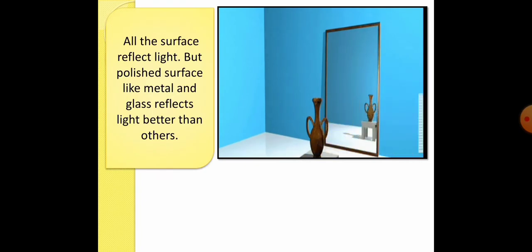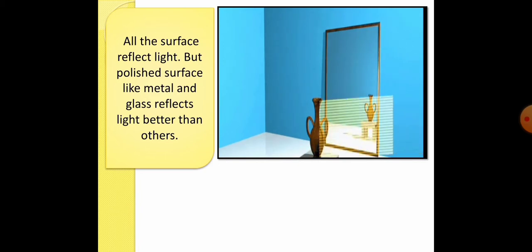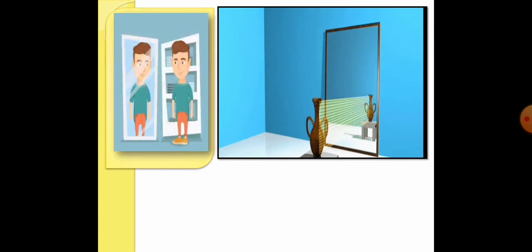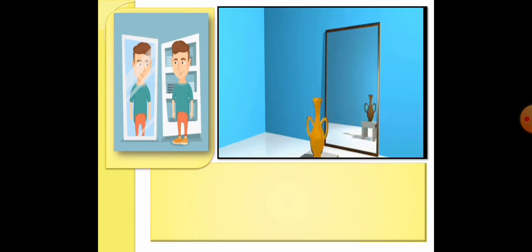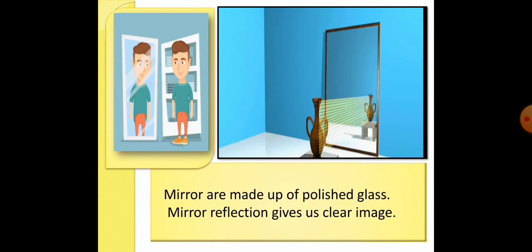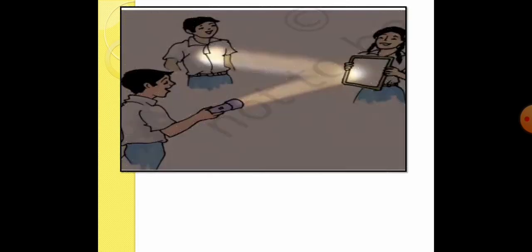Now, all the surfaces reflect light, but polished surfaces like metal and glass reflect light better than others. This is a metal pot and it is reflecting all rays of light. Now, why we see clear image on mirror? Because mirrors are made up of polished glass and that's why mirror reflection gives us clear image. And this is the best example of this statement.